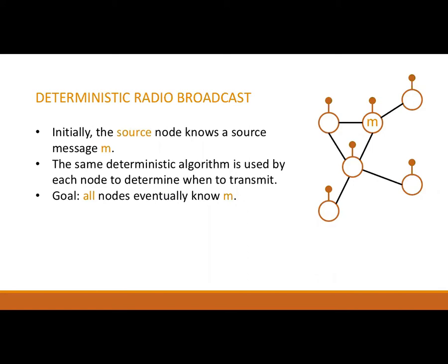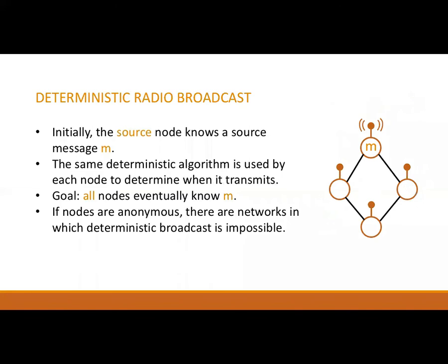The same algorithm is used by each node to determine when it should transmit. This can depend on the history of the node — for example, if the node has not yet received M, it should not transmit. If the nodes have no identifiers, there are networks, for example a four-cycle, in which deterministic broadcast is impossible.